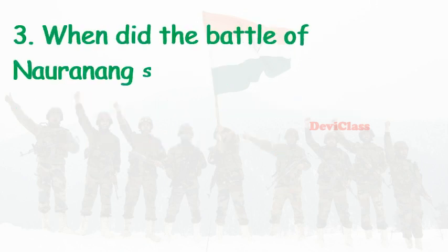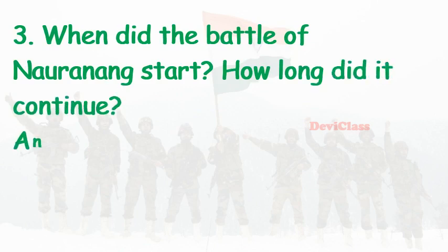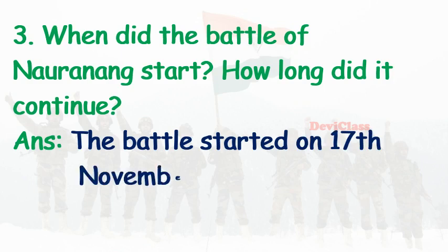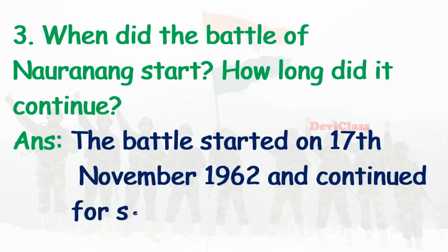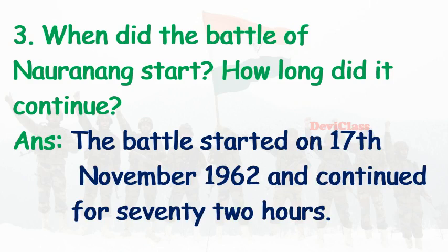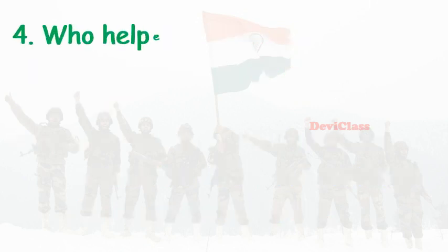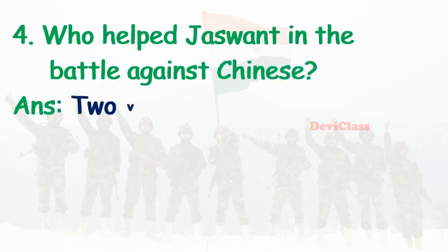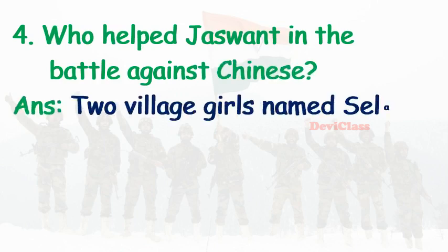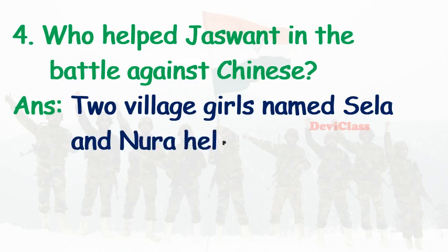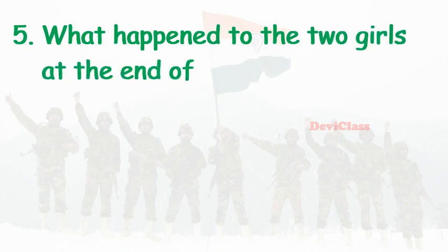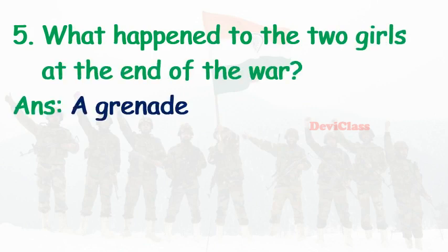How long did it continue? Answer: The battle started on 17th November 1962 and continued for 72 hours. Fourth question: who helped Jaswant in the battle against the Chinese? Answer: Two village girls named Shela and Noora helped Jaswant. Fifth question: what happened to the two girls at the end of the war?